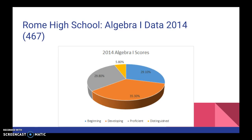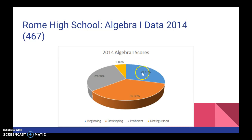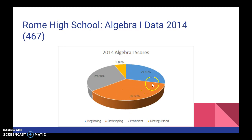Looking at Rome High School's Algebra 1 EOC data for 2014, the number of students that took the test was 467. Our largest percentage was in the developing area, with beginning at 29.1% and proficient at 29.8%. The smallest subgroup was distinguished, which is the highest performance level. The majority of our students ranked in the developing area, and we'll look at how that compares to the state average.